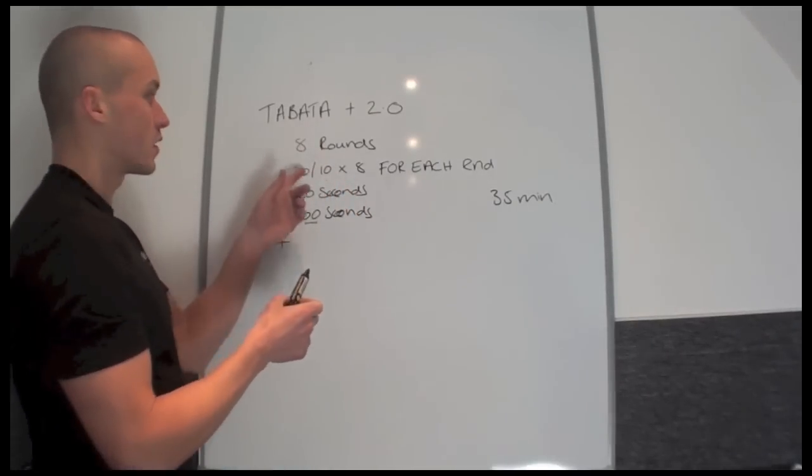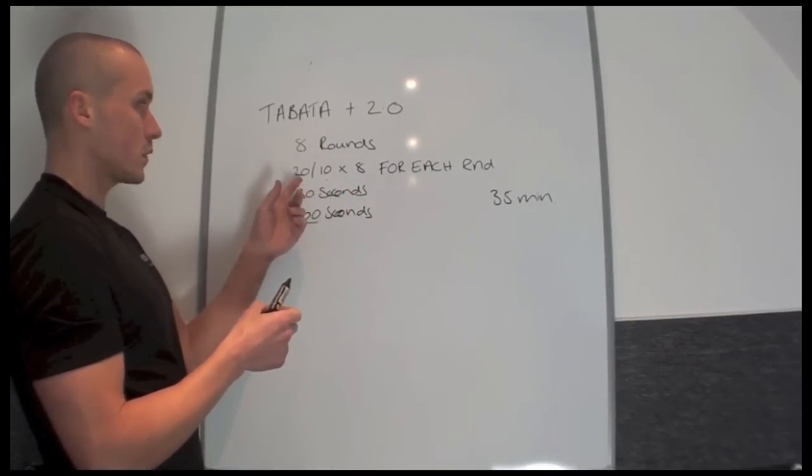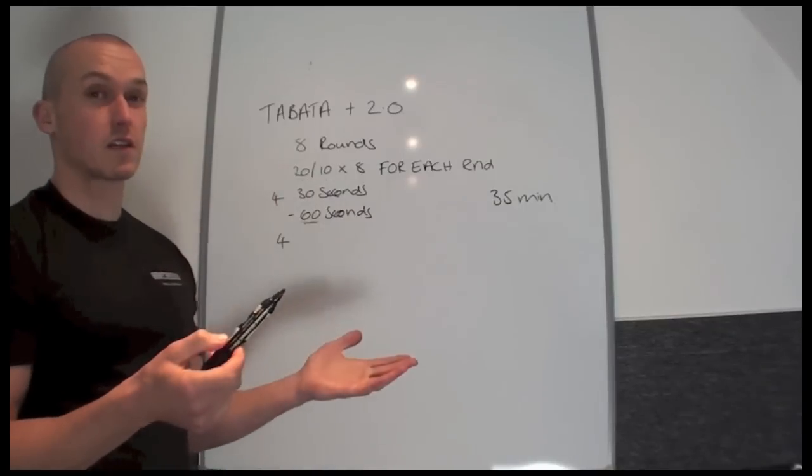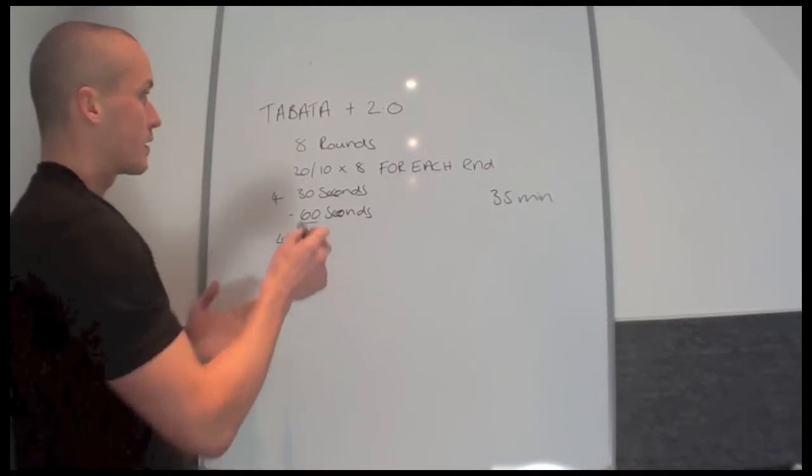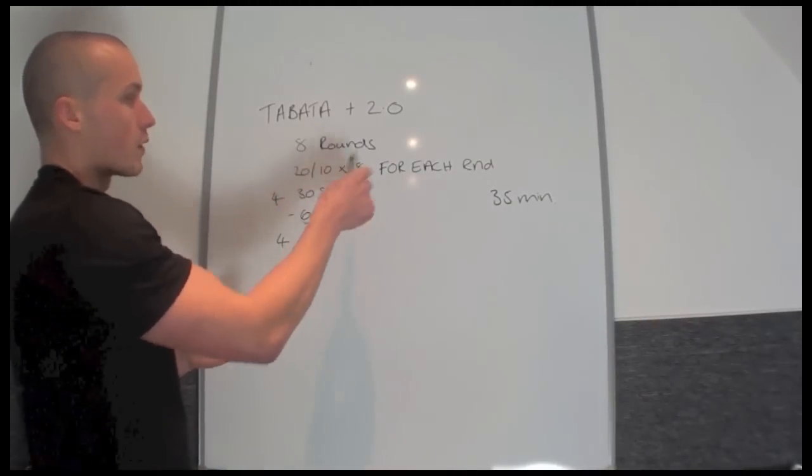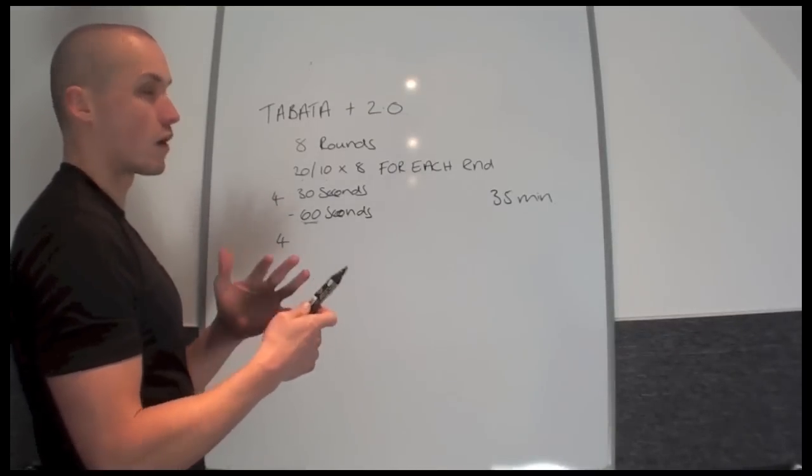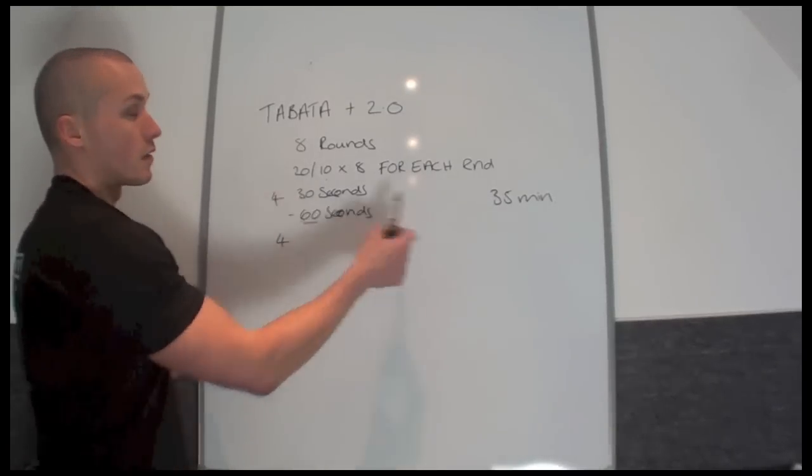Tabata training is very popular. It's only a very short work period. It's good to alternate 2 different exercises, or you can just work 1 exercise if you want to. But with the 8 different rounds, you can apply a whole body approach. So you can work lower body, upper body, push and pull, abs, cardio. You can do a lot in the 35 minutes.